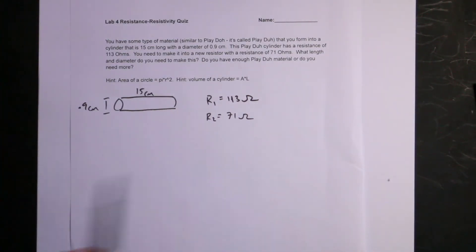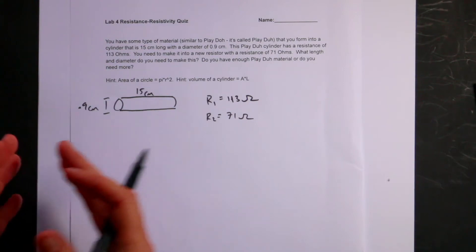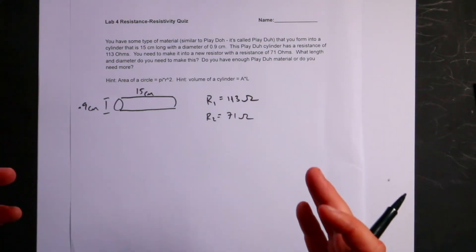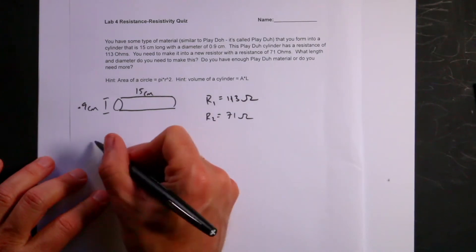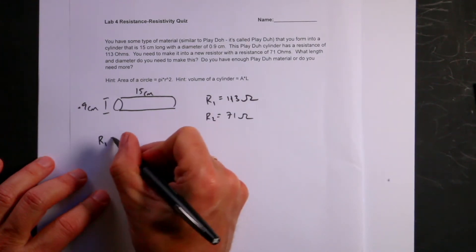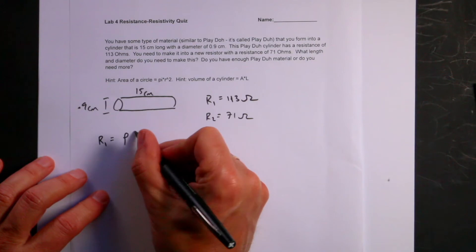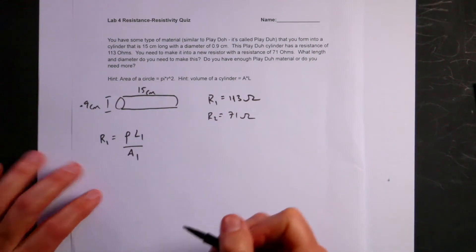Play-Doh has a resistance. If I make the resistor wider, it's going to have a lower resistance. If I make the resistance longer, it's going to have a larger resistance. In fact, I can write the resistance R1 as the resistivity times the length divided by the cross-sectional area.